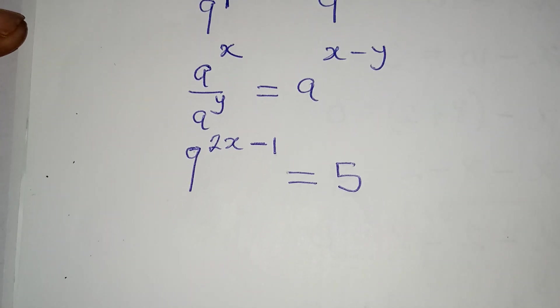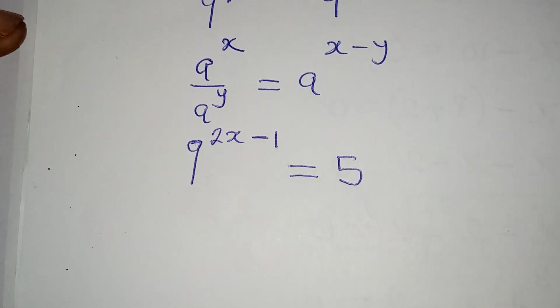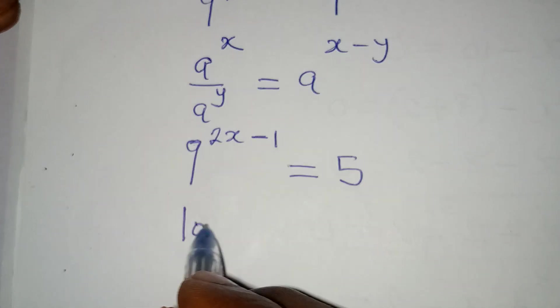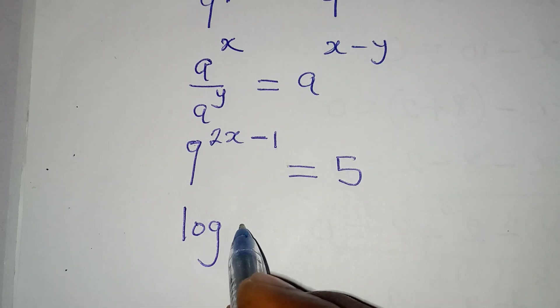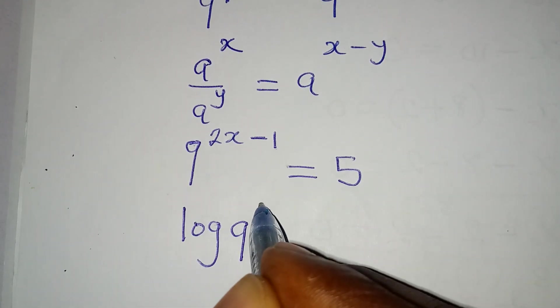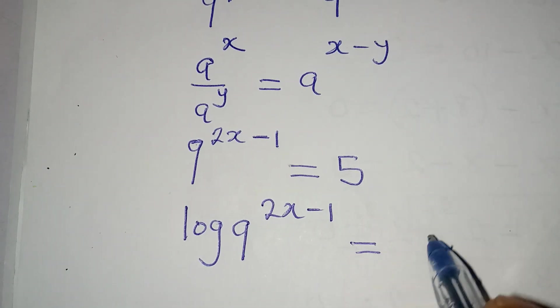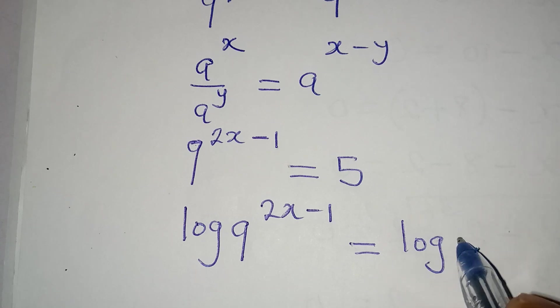We have reduced this to lower terms, and then the next thing we're going to do is to take the log of both sides. So we have log 9 to the power of 2x minus 1 to be equal to log 5.